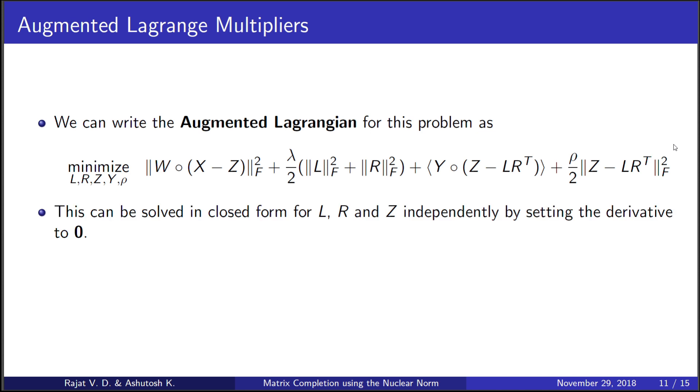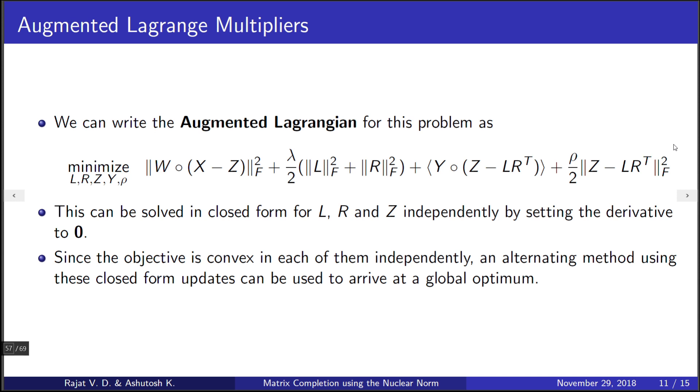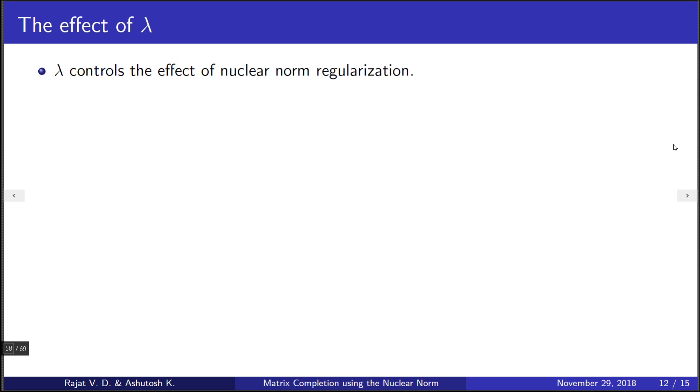This objective is convex individually in L, R, and Z, and it can be solved in closed form independently by setting the derivative to zero. We can form an iterative procedure which involves alternating between the closed-form solutions for L, R, and Z, and this algorithm would eventually converge to the global optimum.